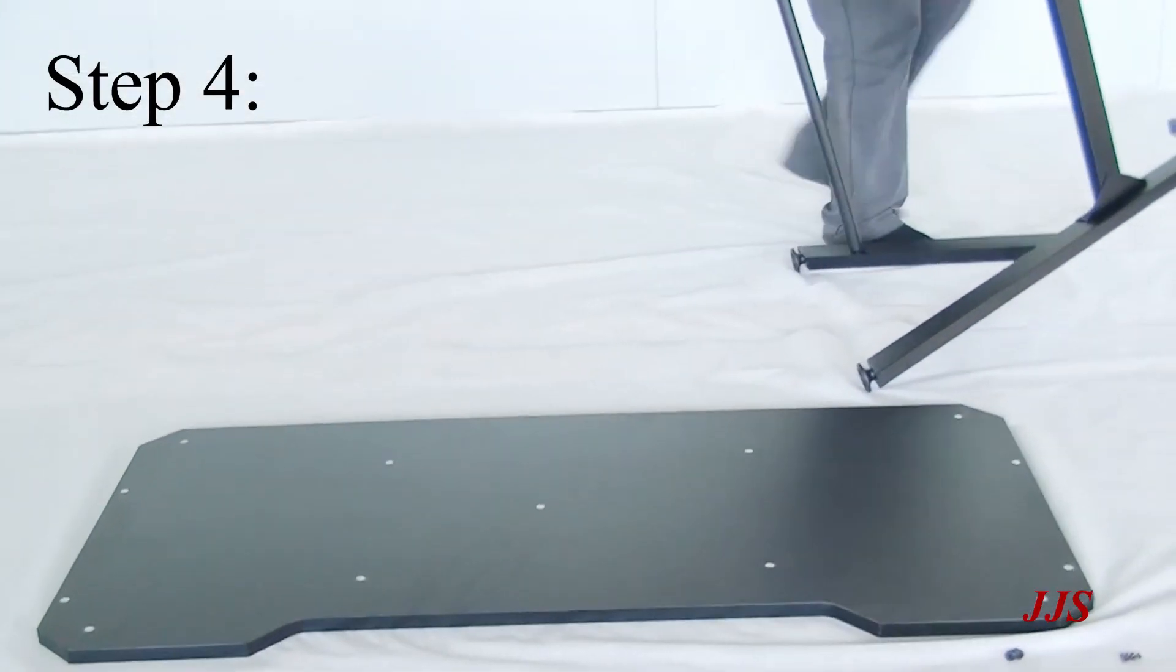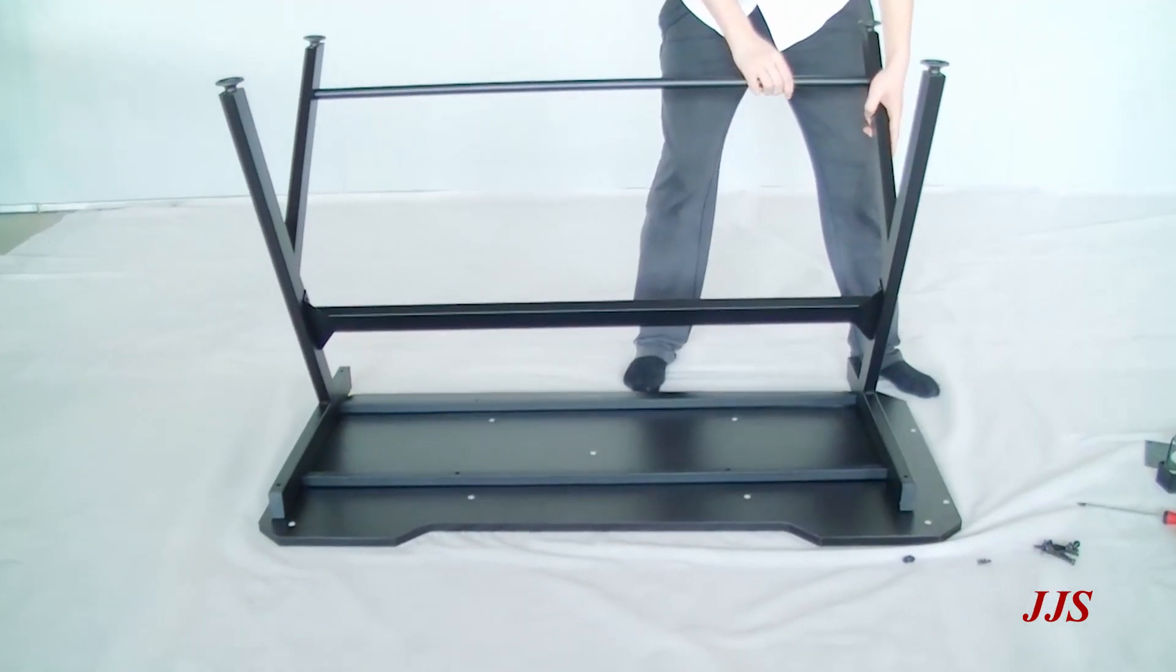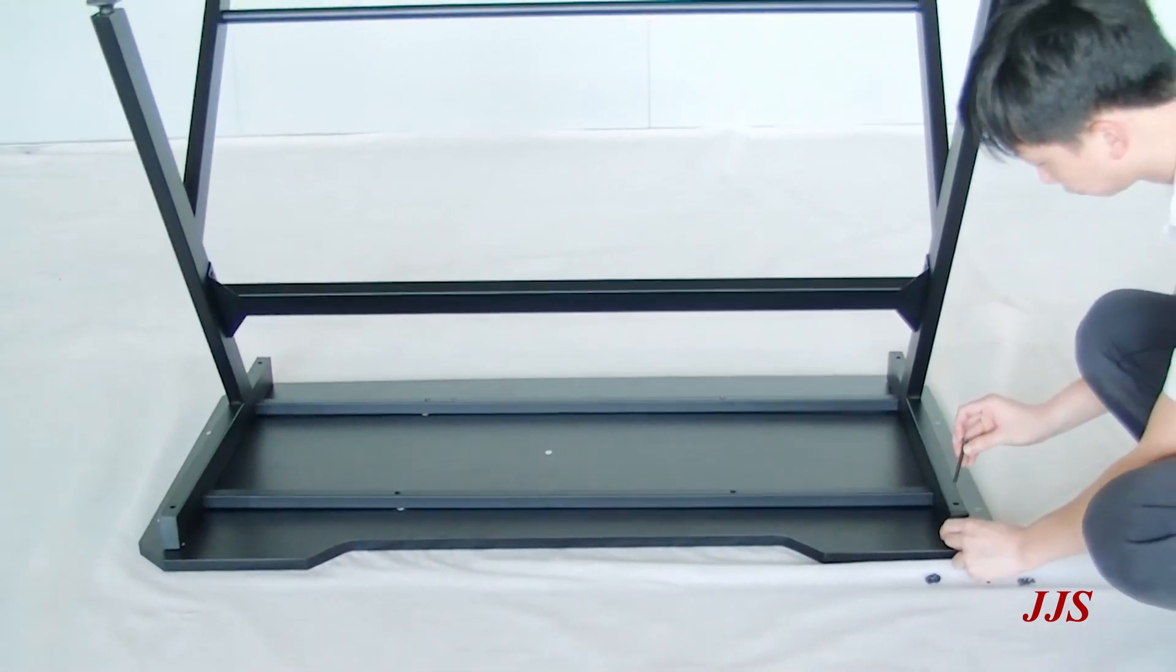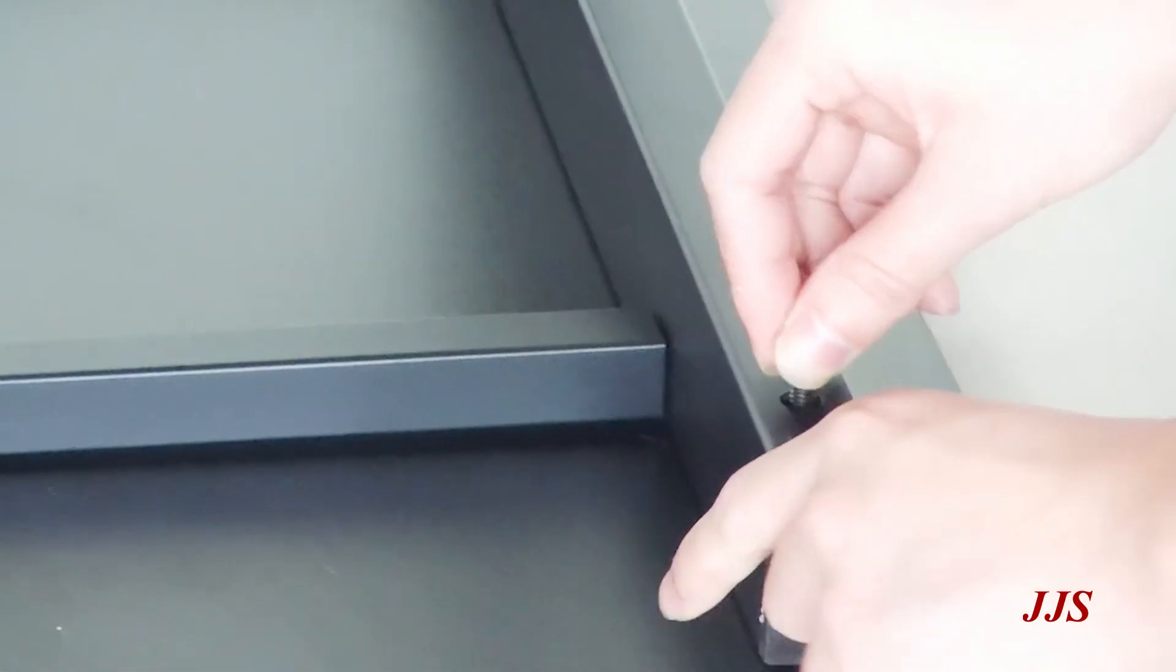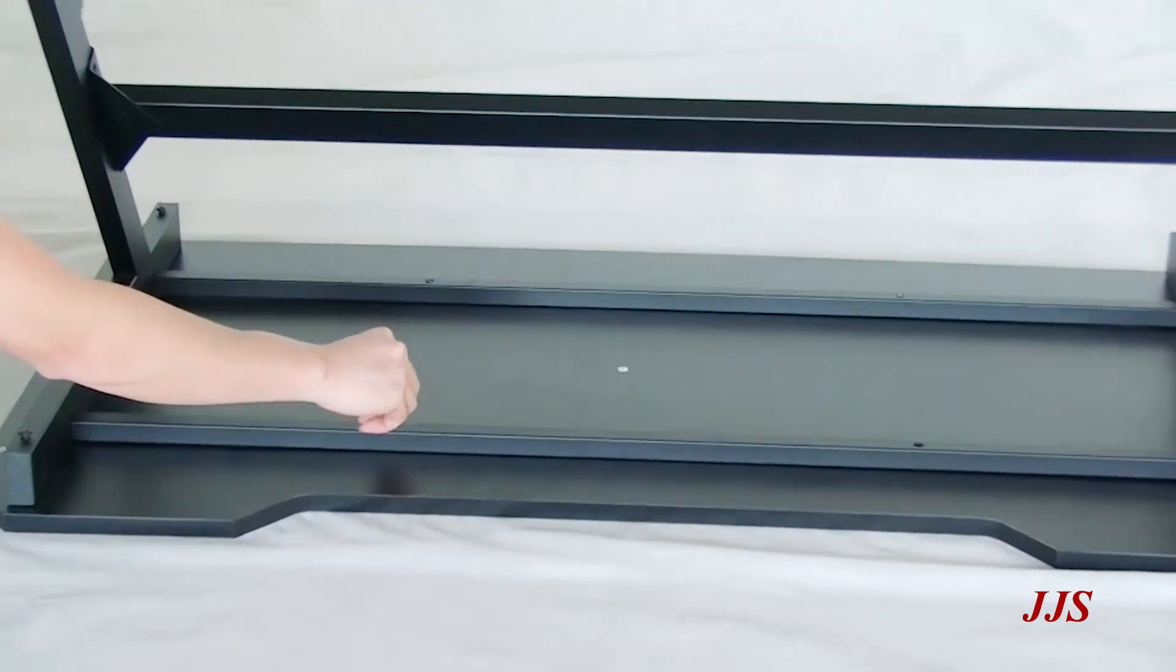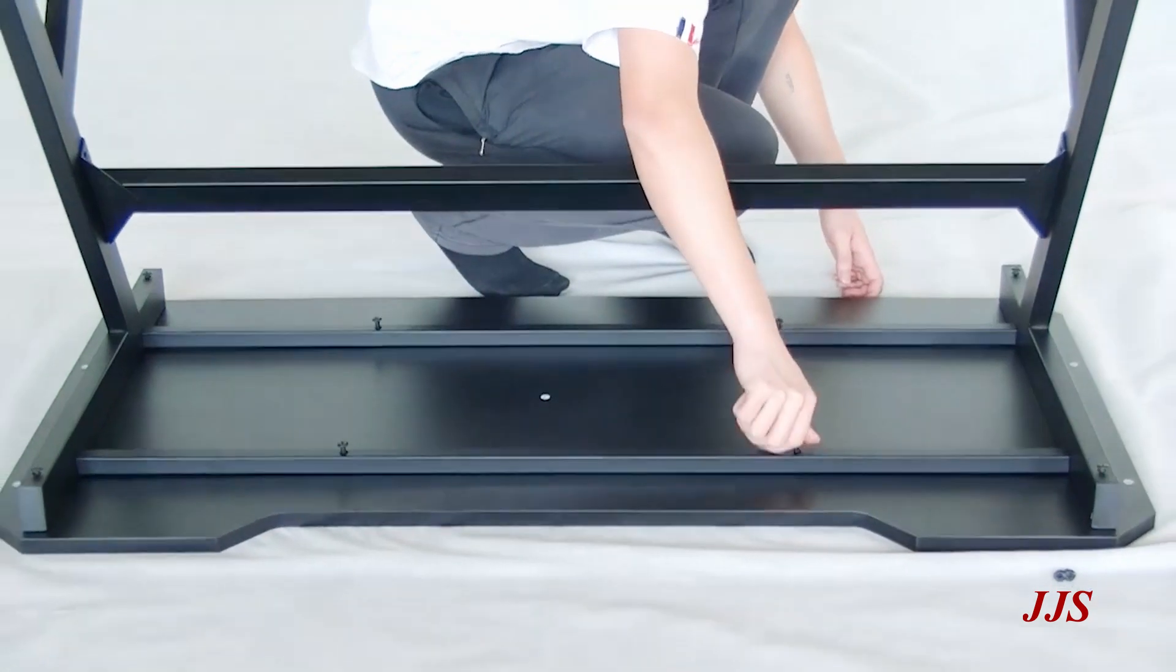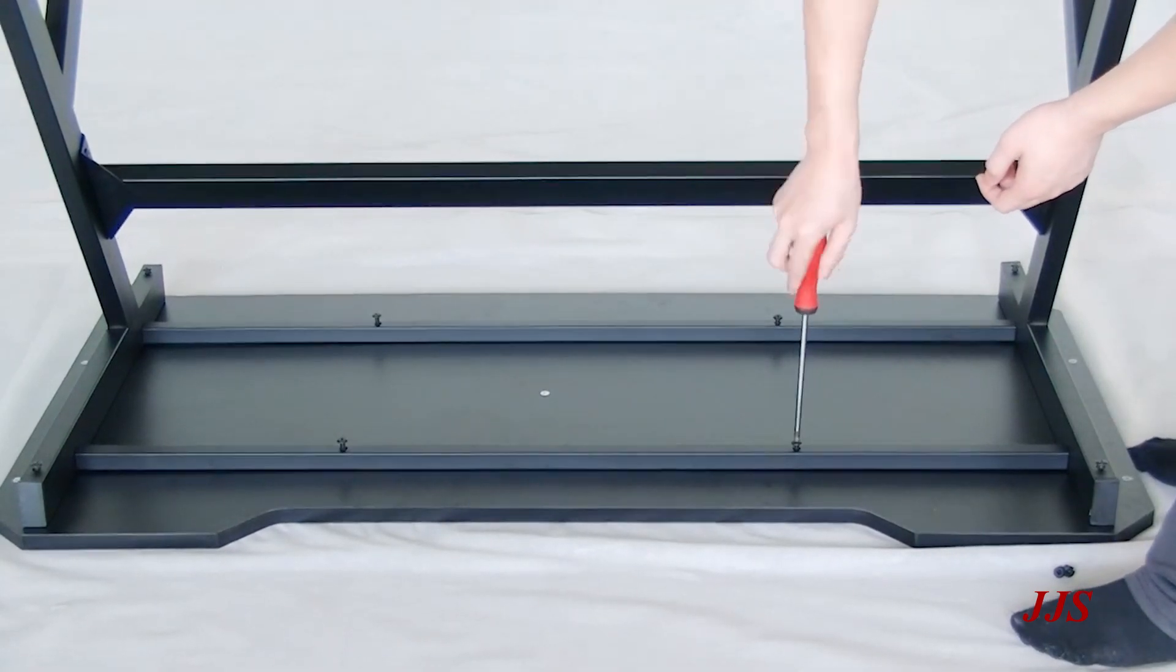Step 4. Put the finished metal frame upside down on the back of the table top. Then join them together by putting screw A on the side and screw C in the middle. Once all the screws are in place, you can tighten them up using a Phillips screwdriver.